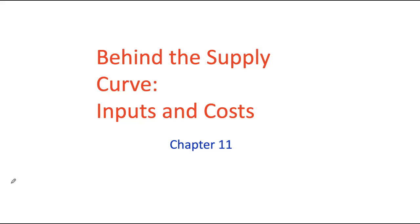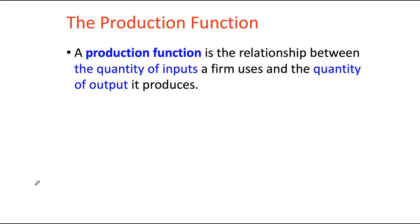Let's look at our production function. A production function is essentially a relationship between the quantity of inputs that the firm uses — these are your raw materials, land, labor, capital, etc. — and the quantity of output that it ends up producing. The firm organizes these factors of production like land, labor, and capital, applies some production method or technology, and out comes the final output.